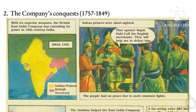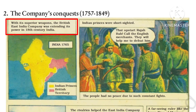Our second point is the Company's Conquest - company की विजय, 1757-1849. With its superior weapons, the British East India Company was extending its power in 18th century India. अपने उत्कृष्ट हथियारों के बल पर British East India Company 18वीं सदी के भारत में अपनी शक्ति का विस्तार कर रही थी. Superior याने उत्कृष्ट, weapons याने हथियार, extending याने विस्तार करना, power याने शक्ति।